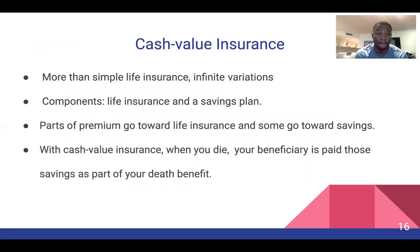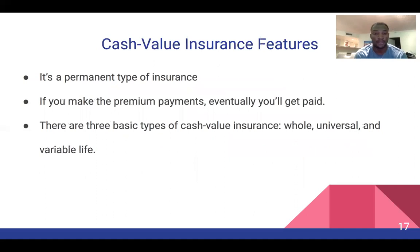Cash value insurance is more than simple life insurance — there are infinite variations. Its components are life insurance and a savings plan: part of the premium goes towards life insurance and the other part towards savings. When you die, your beneficiary is paid those savings as part of your death benefit. Cash value insurance is a permanent type of insurance; if you make premium payments, eventually you'll get paid. There are three basic types: whole, universal, and variable life.